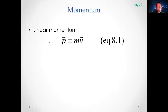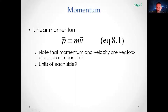Momentum is lowercase p with an arrow over it — that arrow means momentum is a vector. It is defined as mass, which is a scalar, times velocity, which is a vector. The units are kilogram meter per second. That's one of the few quantities that doesn't have its own special name — unlike the newton, pascal, or joule — so maybe that unit will get your name on it someday.